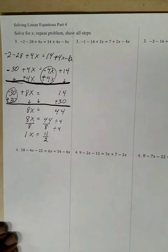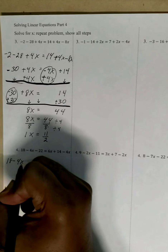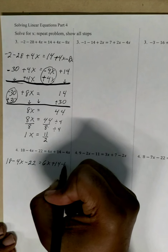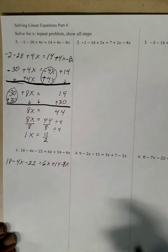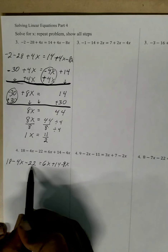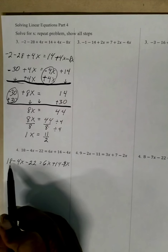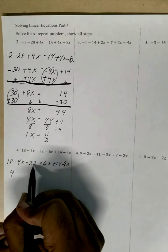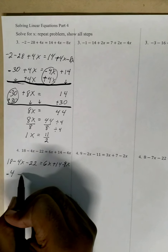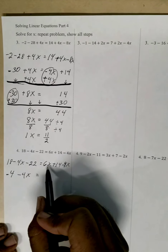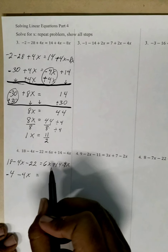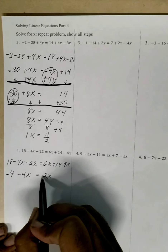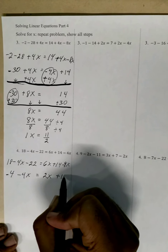Number 4 is 18 minus 4x minus 22 equals 6x plus 14 minus 4x. We can combine 18 and negative 22 — different signs subtract — so we get negative 4, and then negative 4x equals. On the right side, 6x and negative 4x combine — different signs subtract — giving positive 2x, and we bring down the plus 14.